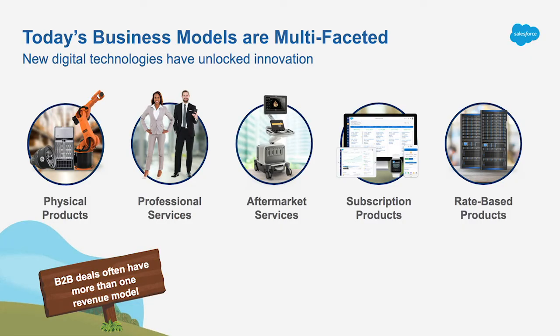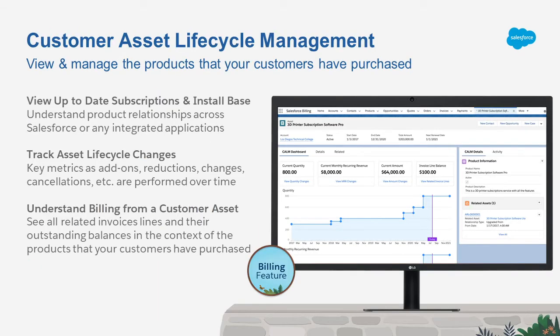As we interviewed customers, we understand that businesses typically sell more than one type of product — physical goods, subscription software, consumption-based products, as well as many other different types. When it comes to subscription software and usage products, those products typically change over time as a result of amendments, renewals, cancellations, etc. As a result, it can be very challenging to have a single source of truth to understand all the products your customers have purchased and how those products have changed over time. With this Salesforce Billing feature, you can automate the relationship between invoice lines and the customer asset, and track outstanding balances and related invoice line data in context of the customer asset.